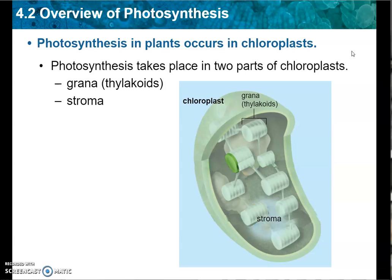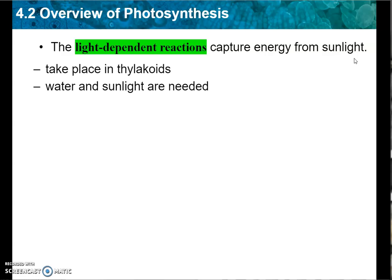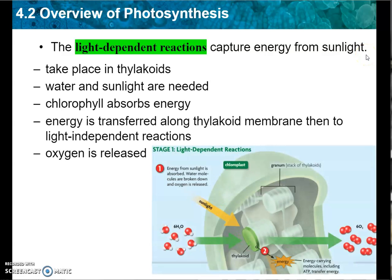The thylakoids are flattened sacs of membranes forming stacks that we call grana. The stroma is the space between the grana. The light-dependent reactions capture energy from sunlight and take place in the thylakoid. Water and sunlight are needed for this process to occur. Chlorophyll absorbs energy, which is then transferred along that thylakoid membrane and into the light-independent reactions. Oxygen is released at this stage. In the next section, we will go more in-depth with each of these steps.